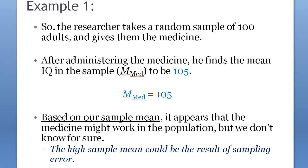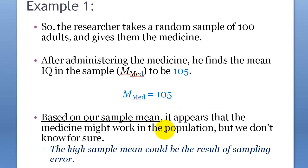Based on our sample mean, it appears that the medicine might work in the population, but we don't know for sure. We took a sample of 100, calculated the sample mean after medication, and got 105. So it appears the medicine might have worked, but we don't know for sure — this difference of positive five IQ points...